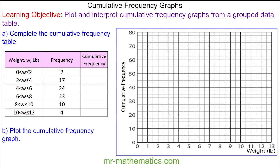Our first cumulative frequency is 2, and this means the frequency of 2 with a weight less than or equal to 2 pounds. So we're going to use this upper bound. The next cumulative frequency is 19. This means that there's a frequency of 19, or 17 more, less than or equal to 4 pounds.